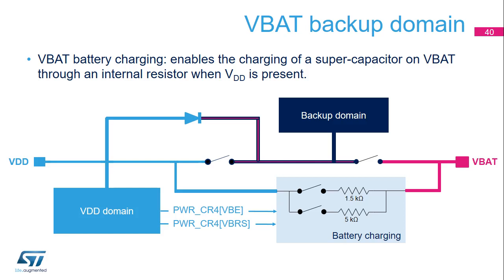The battery charging feature enables the charging of a super capacitor connected to the VBAT pin through the internal resistor when VDD supply is present. The charging is enabled by software and is done either through a 5 kΩ or 1.5 kΩ resistor depending on the software configuration. Battery charging is automatically disabled in VBAT mode. The VBE bit field of the PWR_CR4 register enables battery charging, and the VBRS bit field selects the resistance value. During the startup phase, if VDD is established quickly and VDD is greater than VBAT plus 0.6 V, a current may be injected into VBAT through an internal diode. If the power supply or battery connected to the VBAT pin cannot support this current injection, it is strongly recommended to connect an external low-drop diode between the power supply and the VBAT pin.